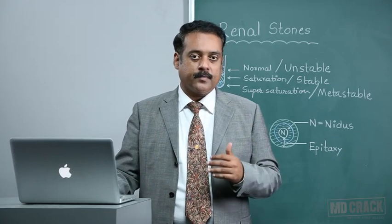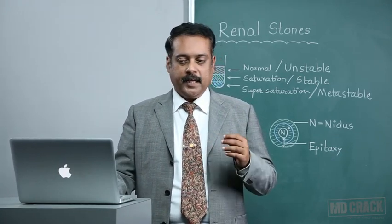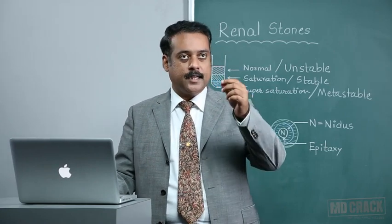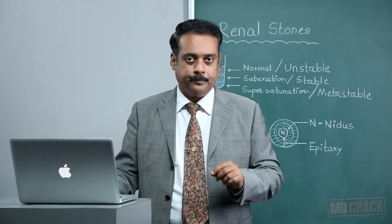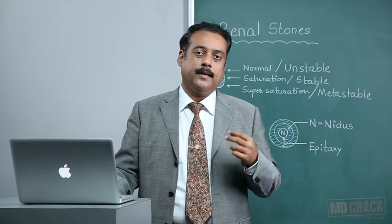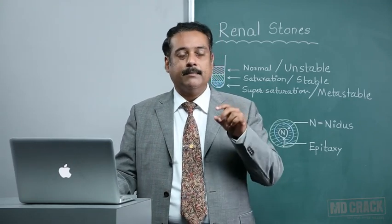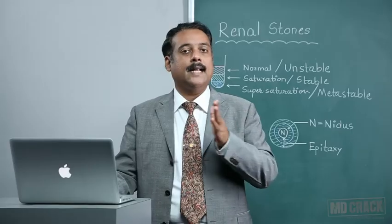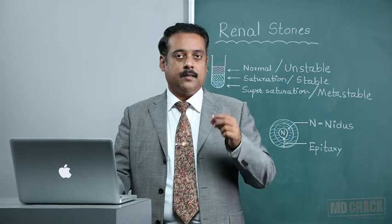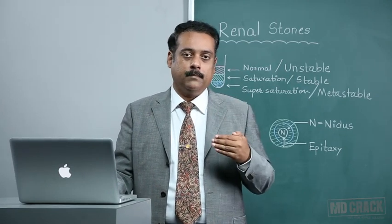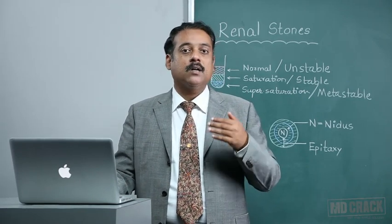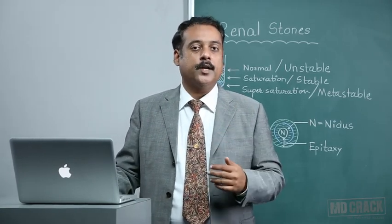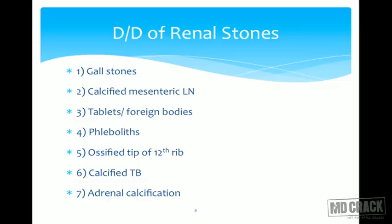Regarding differential diagnosis, not every radiopaque shadow on x-ray is a renal stone. There can be associated clinical factors that mimic a renal stone, such as gallstones. To differentiate, take a lateral x-ray. If the radiopaque shadow lies behind the vertebral column - since the kidney is a retroperitoneal structure - it confirms a renal stone, whereas a gallstone shadow will be predominantly in front of the vertebral column on lateral profile.